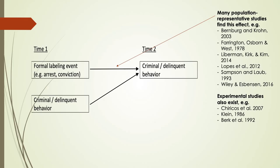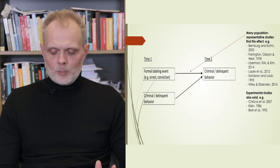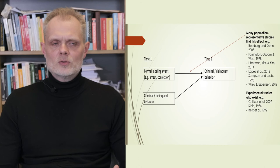If we just look briefly at this slide, this is the key hypothesis. Does formal labeling at time two influence criminal behavior at time two while controlling for criminal involvement at time one? There are actually several studies, quite a few studies, that confirm this hypothesis. Some of these studies are very rigorous and apply a lot of statistical control.